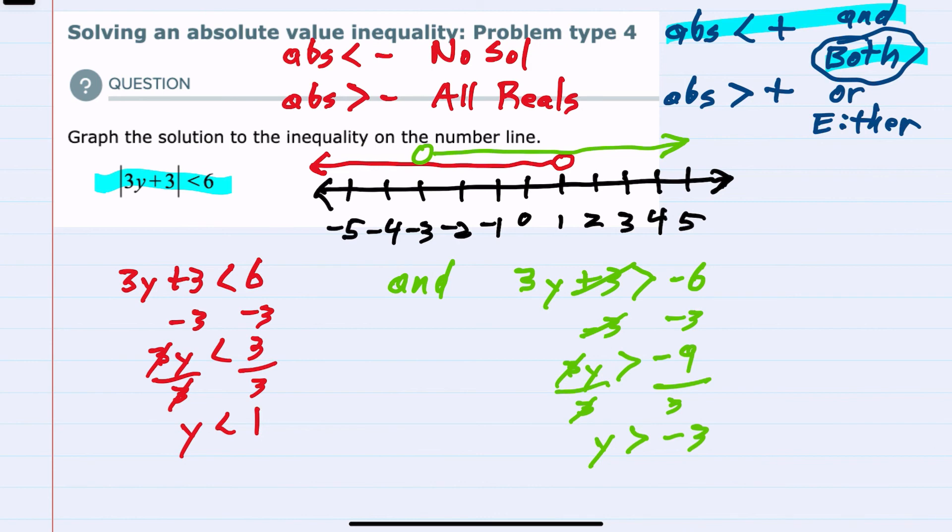And they overlap between negative 3 and 1, not including those endpoints. So the solution that we would be graphing would be just that, between negative 3 and 1.